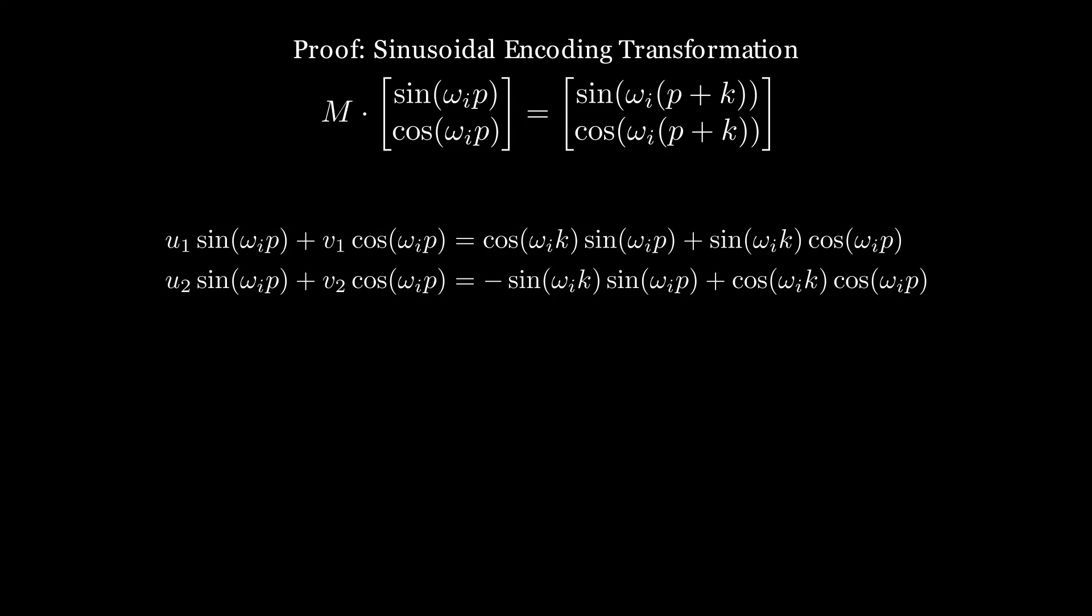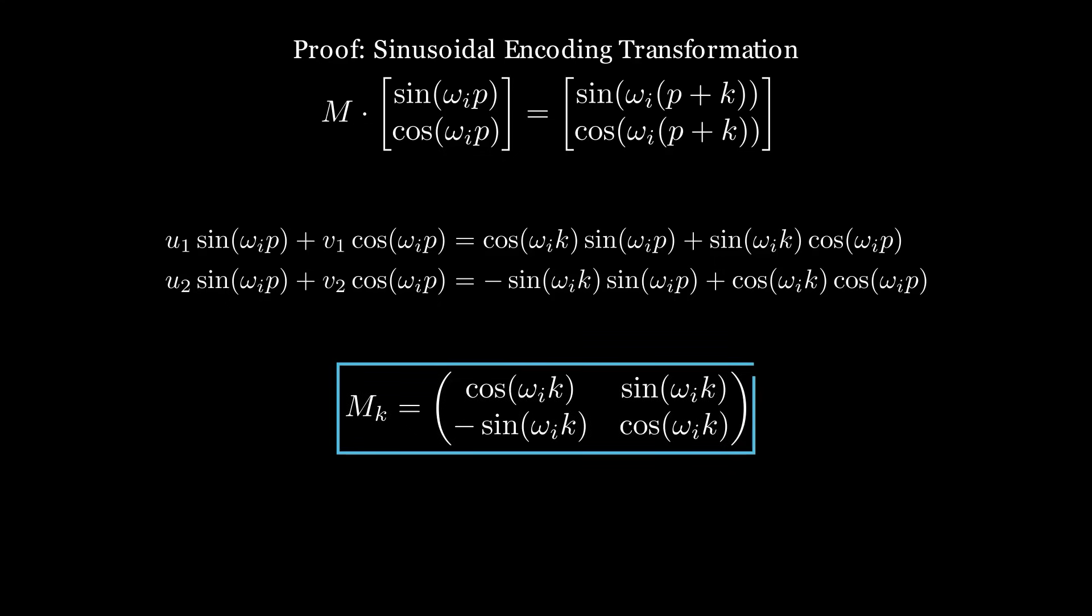By comparing these values, we can see that u1 is equal to cos(w_i*k), v1 is equal to sin(w_i*p) and so on. And this m_k is a simple rotation matrix.